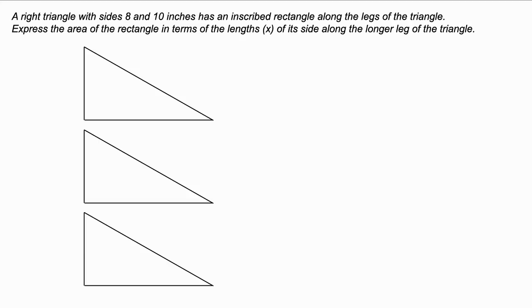Well, first of all, let's look at the first sentence. It says a right triangle with sides 8 and 10. You'll notice that I have three triangles here. There's a reason for that. So the longer side is going to be 10, and the shorter side is going to be 8. It has an inscribed rectangle. Let's keep reading a little bit more. They want us to express the area of the rectangle in terms of the length x of its side along the longer leg.